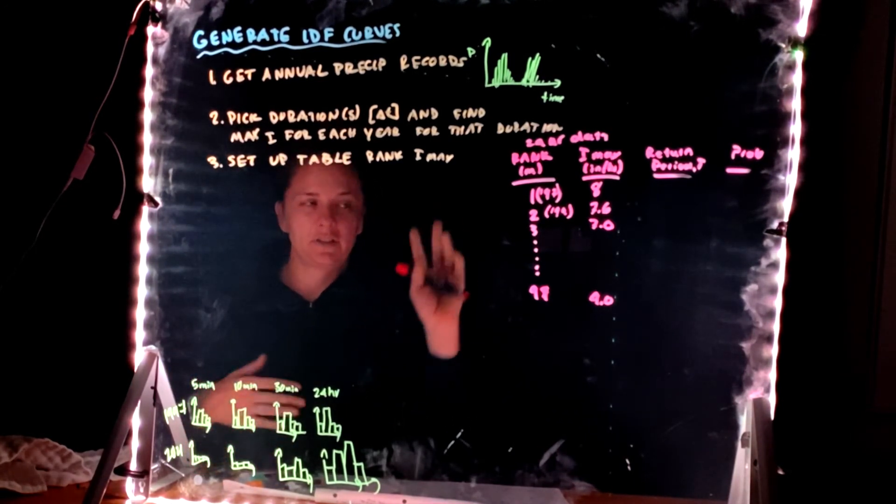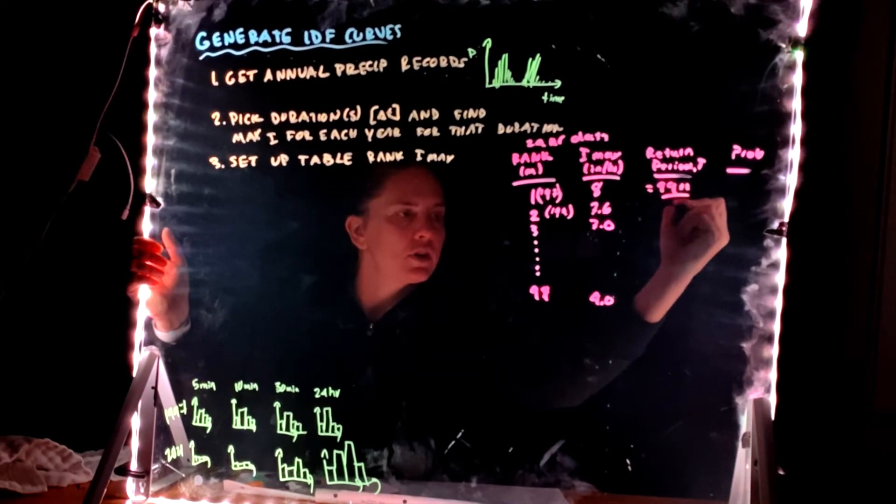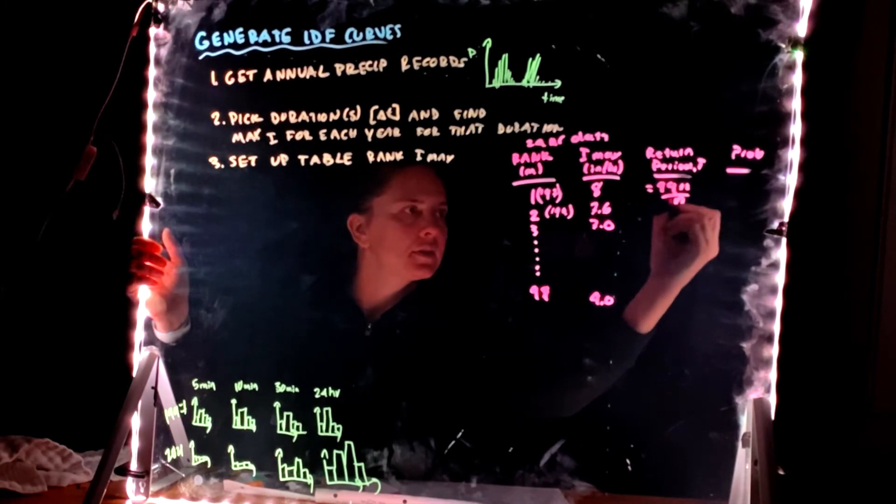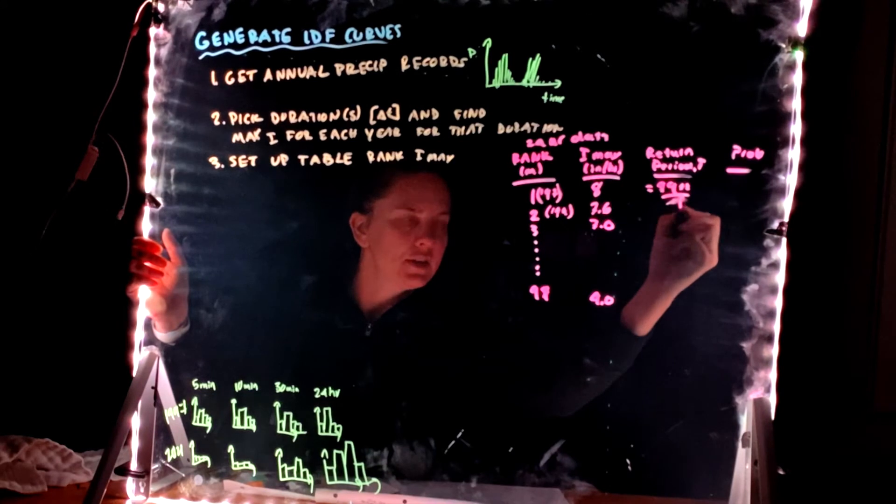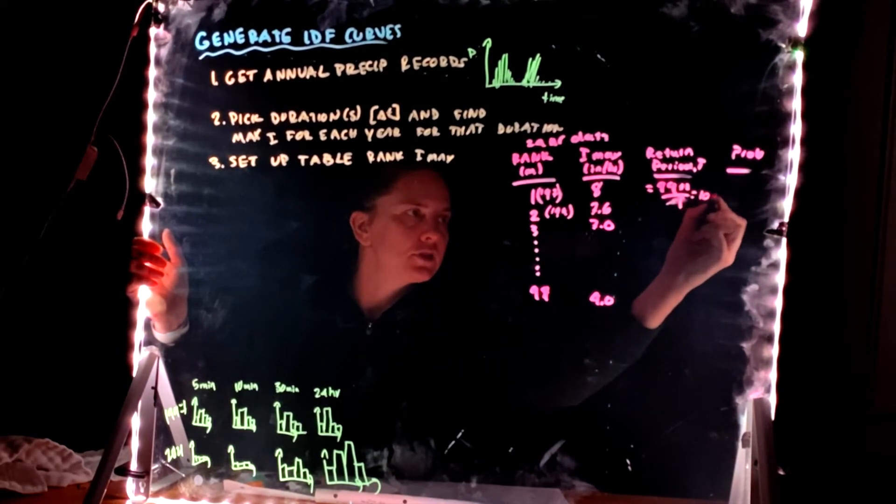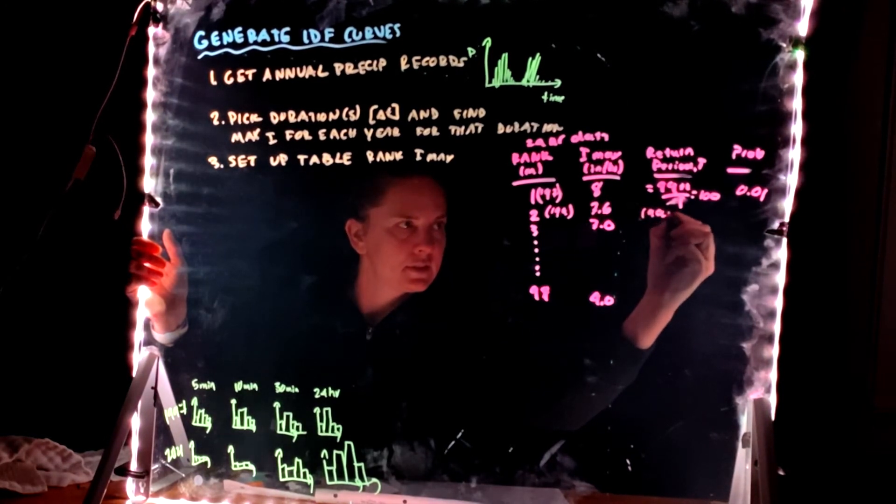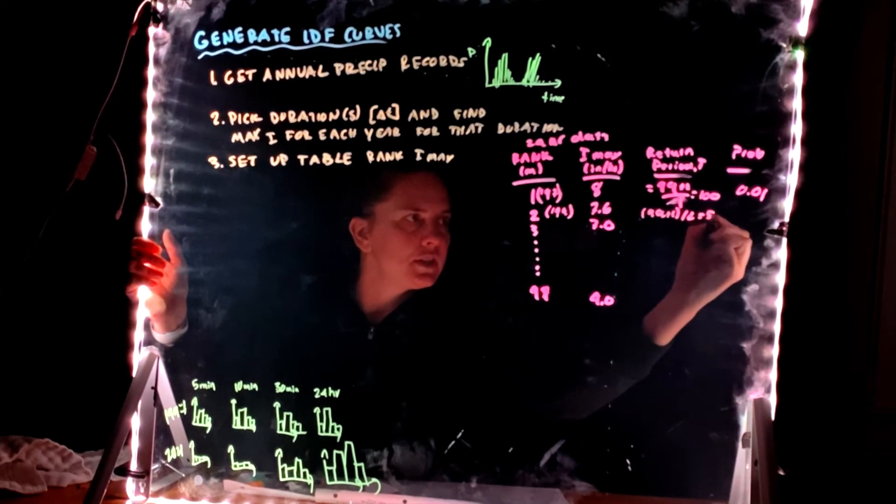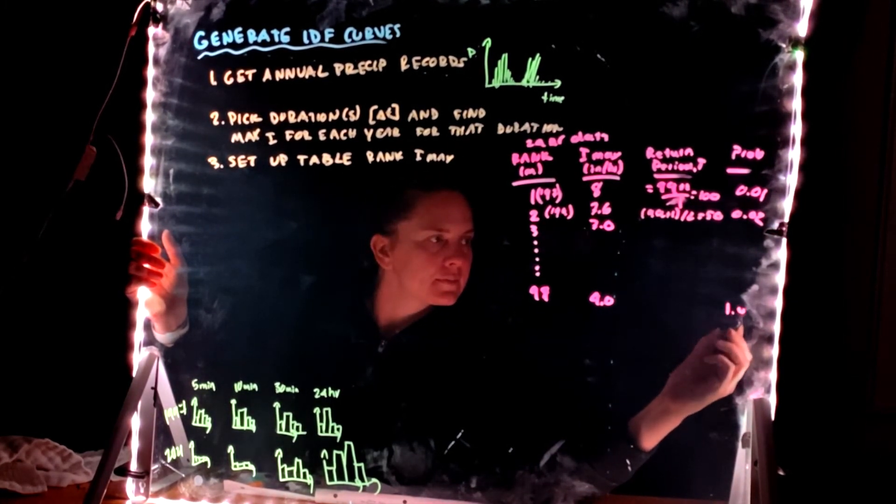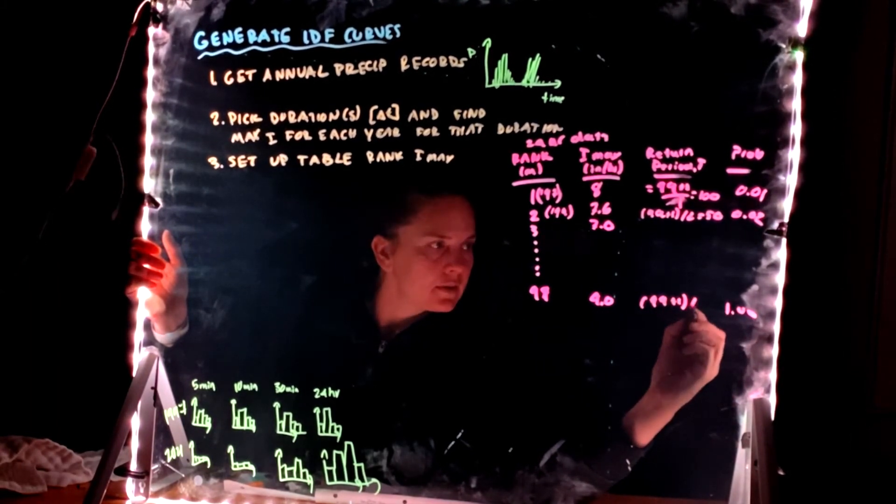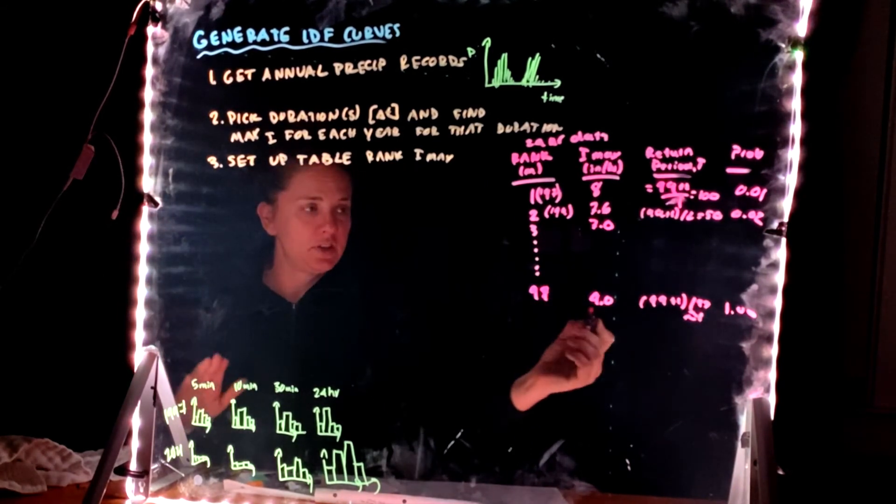This means that it actually, the total rainfall was eight inches per hour times 24 hours, right? Not just eight total inches. And you keep doing this. This goes up to 99. And let's say the third year you had 7.0 inches per hour. And then the lowest was 4.0. So I've ranked these from highest, number one, most amount of rainfall, highest intensity, to number 99. Now, in the example I gave here, I didn't quite have 100 years. Let's say what you did. My return periods I'm going to calculate as m plus 1 over n, where n is the total. Sorry, 99 plus 1, the total, divided by the rank. This is 100. This is my 100-year storm. This has a probability of 1 over 100, 0.01.